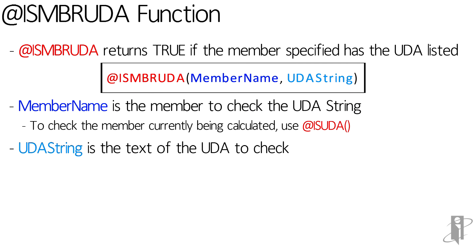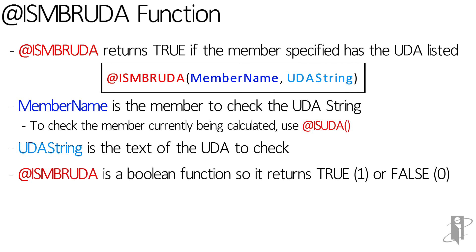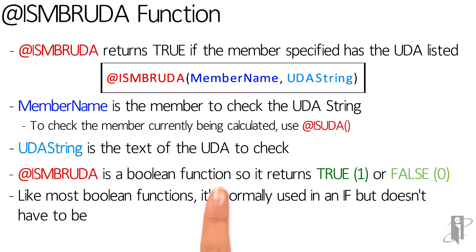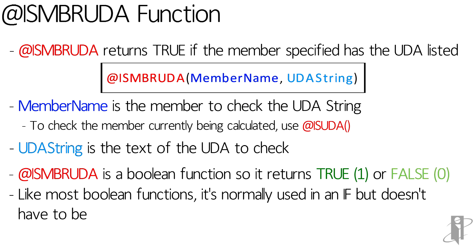UDAString is the text that you want to check for. If the condition is true it will return a true, otherwise known as a one. If it's not true it will return a false, otherwise known as a zero. And like all boolean functions, you normally use it inside of an if, but there are plenty of cases where you wouldn't want to do that.